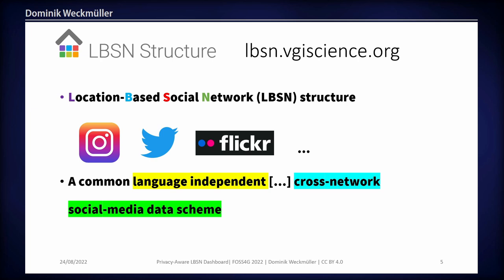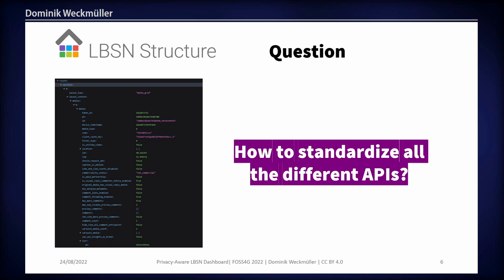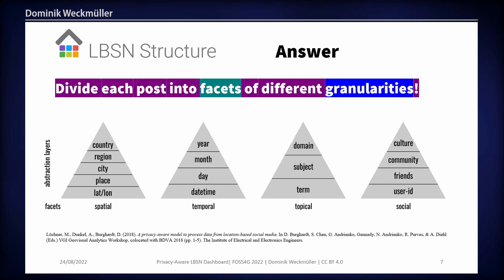LBSN structure is a common, language-independent, cross-network social media data scheme. The question it answers is simple: how do you standardize all the different APIs from these platforms? Flickr has a public API, Twitter has one too, as does Instagram — and all these APIs are quite different. For example, the Instagram API returns tons of different nodes. All these APIs return different JSON when queried, and the idea is to find a way to standardize all that different returned data.